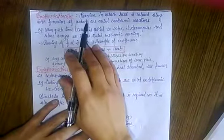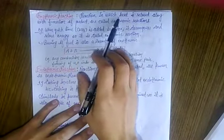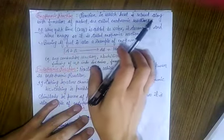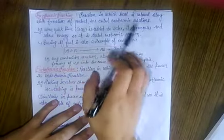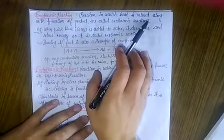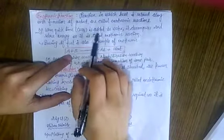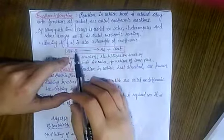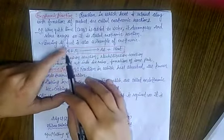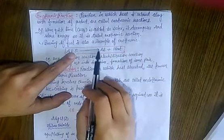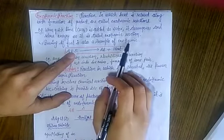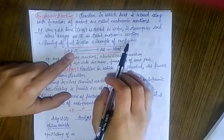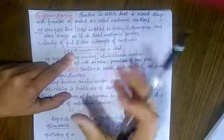What is an exothermic reaction? Reactions in which heat is released along with the formation of products are called exothermic reactions. Exo means heat release — heat exits the reaction.